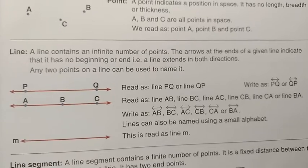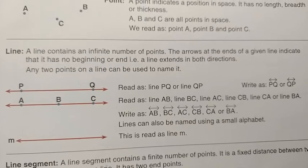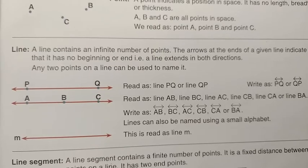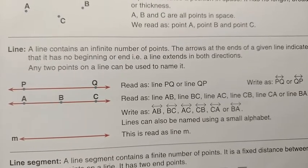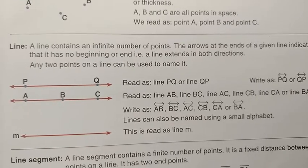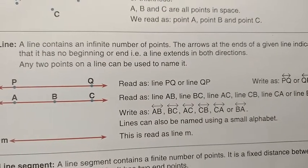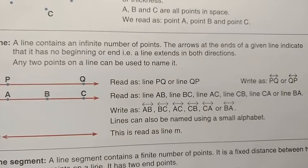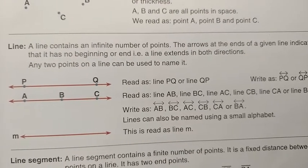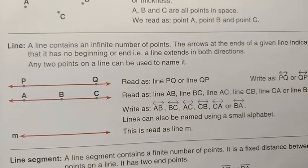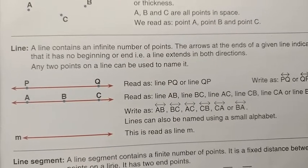Next, I am going to explain line. See here — lines AB, AC, and M and N are shown. A line contains an infinite number of points. The arrows at the ends of a given line indicate that it has no beginning or end. That is, the line extends in both directions. Any two points on a line can be used to name it.